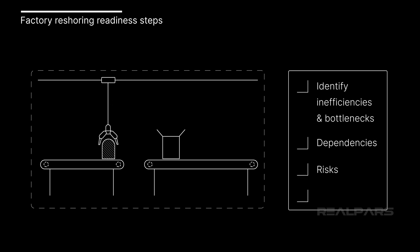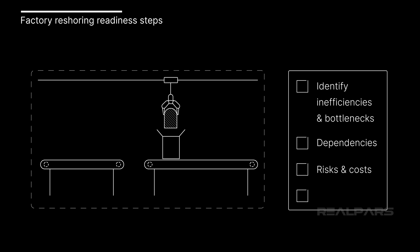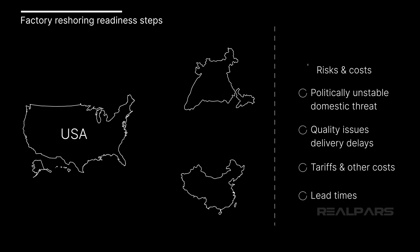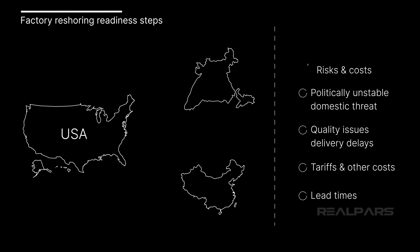Next, evaluate risks and determine costs. Which suppliers are in areas that are politically unstable or pose a domestic threat to the supply chain? Have certain suppliers had quality issues or constant delivery delays? What is the current schedule of tariffs, transportation costs, and costs for inventory holds? Finally, how do lead times affect your production scheduling? What if a critical part is one day late or one week late in arriving? Are there alternate domestic suppliers?